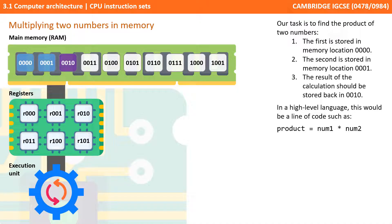Our task is to find the product of two numbers. The first number is going to be stored in memory location 0000, the second number in 0001, and then the result of the calculation — the product of those two numbers — should be stored back in memory location 0010. In a high level language this would be a line of code something like: product equals num1 times num2, where each of those words are variables or locations.